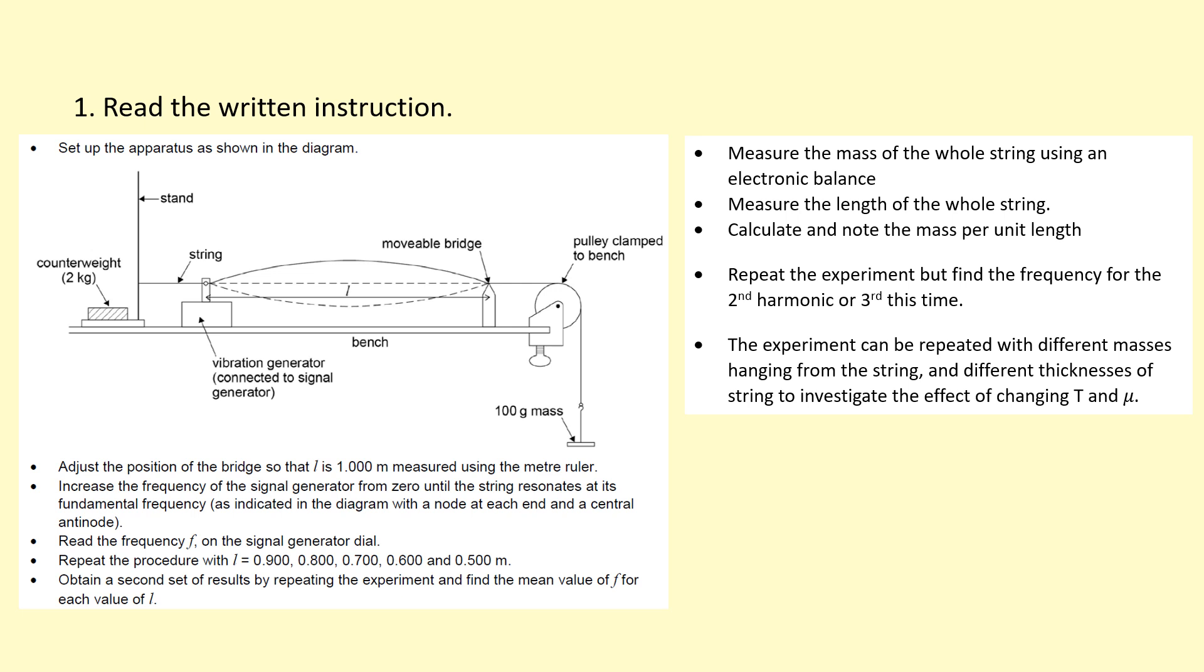So step one is to be able to read the written instructions that you're going to be given. This is the instruction that you'll be given during the practical. Read it, understand it, and you'll have to follow them during the practical. Now you can deviate from the written instructions but you'll have to discuss how and why you did that in your write-up at the end. So for example, maybe you didn't choose to use the fundamental frequency, maybe use the second harmonic instead, so you'll have to discuss why you might have done that. Or maybe you didn't use these lengths that are suggested, so you have to also discuss why you might have used different lengths.